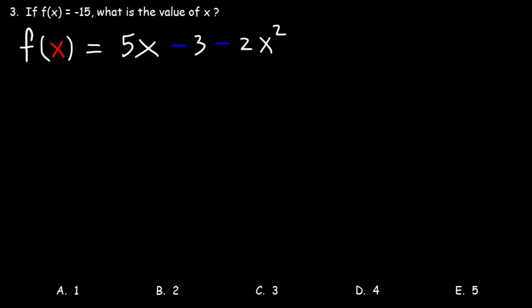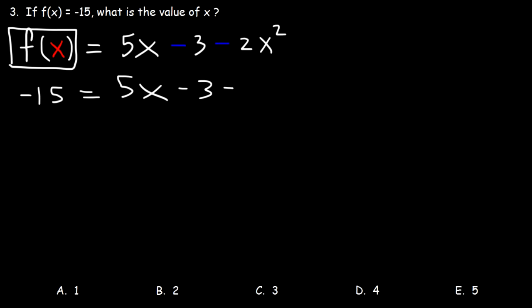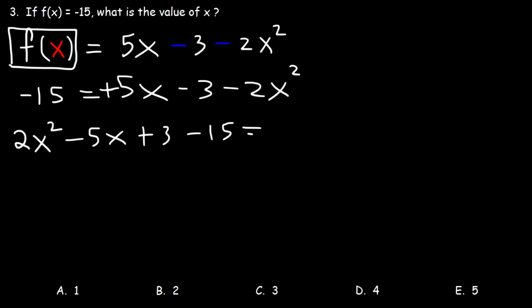Number three: if f of x is equal to negative 15, what is the value of x? So let's replace f of x with negative 15. Now since we have a negative in front of 2x squared, let's take everything from the right side and move it to the left side. So the negative in front of 2x squared becomes positive 2x squared on the left side. 5x is positive on the right, so it's negative on the left. Negative 3 changes to plus 3, and we keep negative 15 on the left.